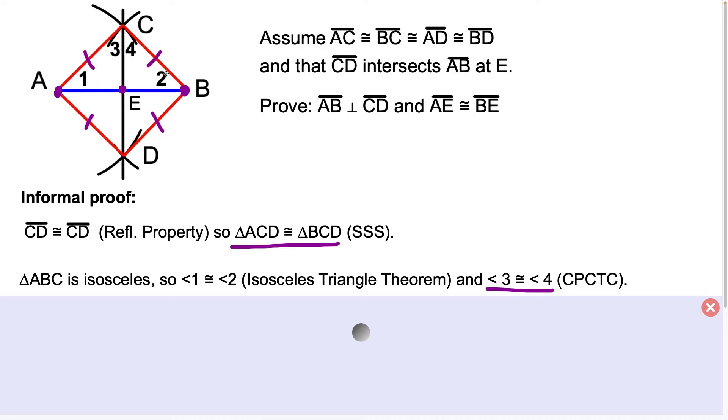So now that we have two pairs of angles that are the same and the sides between them are the same, this allows us to state here that triangle ACE is congruent to triangle BCE by the angle-side-angle postulate. Oh, and if you've never seen that symbol before, the three dots in triangle formation means therefore.